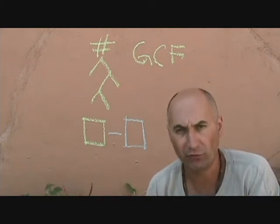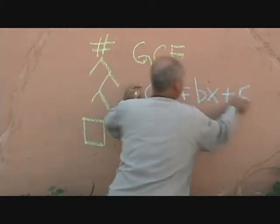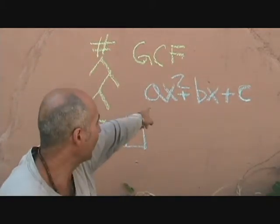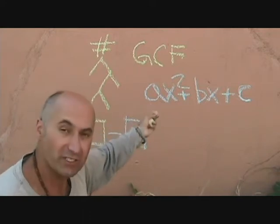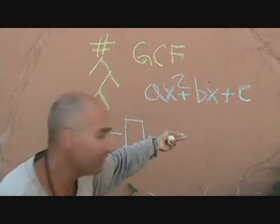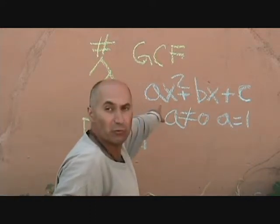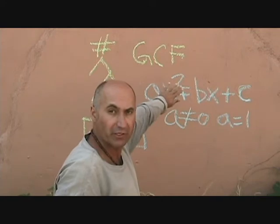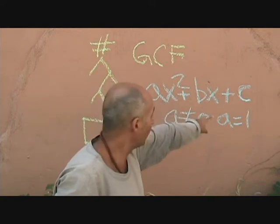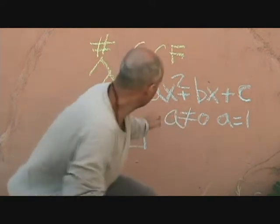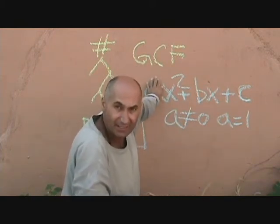We've talked about simple trinomial factoring. Trinomials are of the form ax² + bx + c, where a cannot equal zero. For simple trinomials, a has to equal one. So for simple trinomial factoring, a does not equal zero — because if a equals zero, this would no longer be a quadratic equation, the x² term would disappear. We've done simple trinomials where a equals one, so basically we have x² + bx + c, and those we already know how to factor.